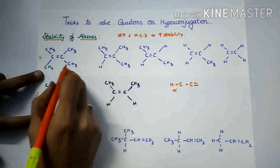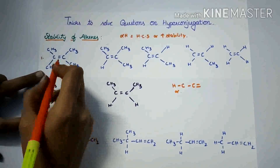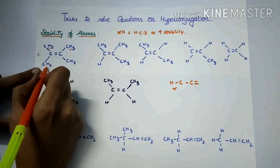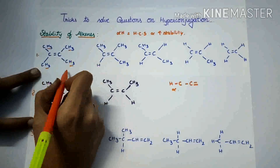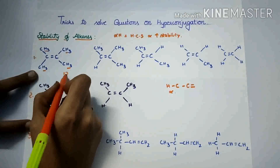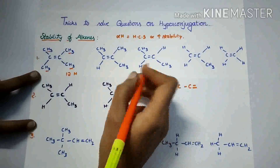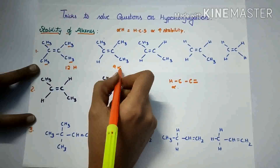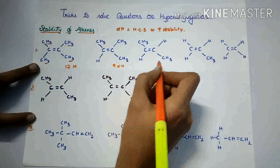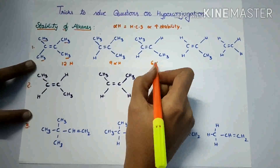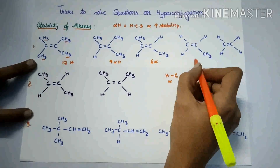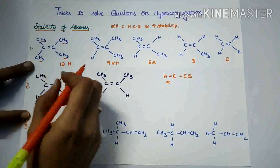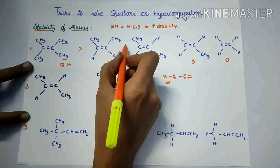In this question, the alpha hydrogens are: these three, these three, and these three — total 12 alpha hydrogens. Here, nine alpha hydrogens. Here, six alpha hydrogens. Here, three alpha hydrogens. And here, there are no alpha hydrogens. So the stability order is in this order.